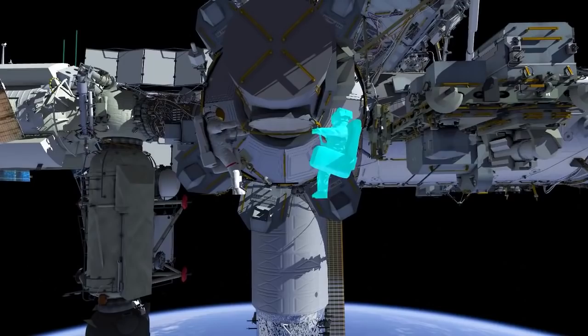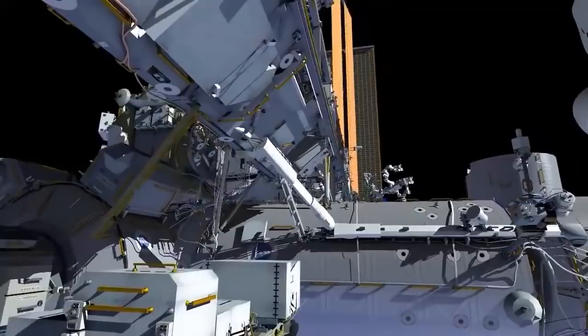At the start of the EVA, EV1 Thomas Pesquet comes out first, followed by EV2 Shane Kimbrough.